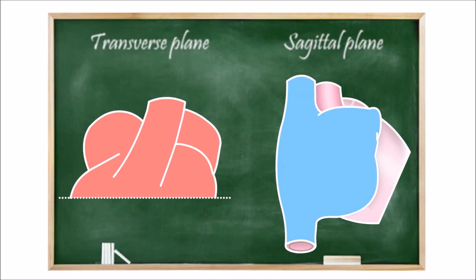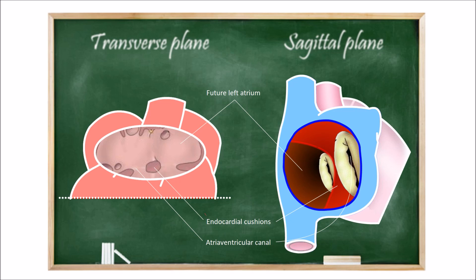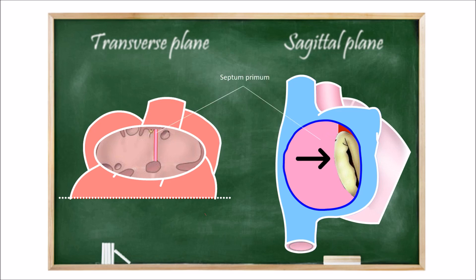To understand this embryonic process, it is necessary to study the common atrium in different perspectives: the transverse plane to the left and the sagittal plane to the right. The first step is the formation of the septum primum — a membranous tissue that grows from top to bottom and from back to front, beginning from the roof of the common atrium and ending in the endocardial cushions. After that, part of this membrane reabsorbs to give origin to the foramen secundum, also known as ostium secundum.